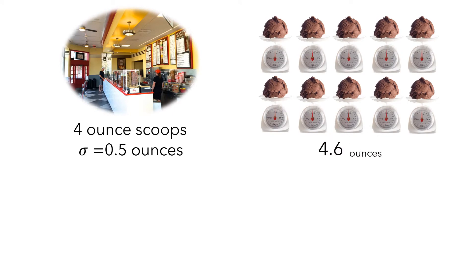The central limit theorem tells you that a sampling distribution of 10 scoop averages can be modeled reasonably well by a normal distribution, with a mean of 4 ounces and a standard deviation of 0.5 divided by the square root of 10 ounces. And then we can use the statistics software to compute the p-value.